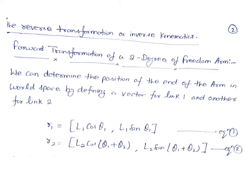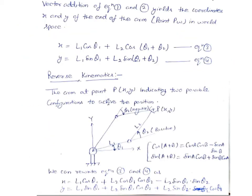We define a vector for link one and another for link two. Vector R1 depends on L1 cos theta one and L1 sin theta one. Similarly, R2 equals L2 cos(theta one + theta two) and L2 sin(theta one + theta two). Adding these two vectors, the x-coordinate of the end effector is x = L1 cos theta one + L2 cos(theta one + theta two), and y = L1 sin theta one + L2 sin(theta one + theta two).